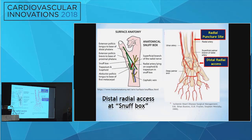Talking about the anatomy, we are discussing transdistal radial access through the anatomic snuffbox, which is a triangular area on the dorsal surface of the hand. Anteriorly is the extensor pollicis brevis, posteriorly is the extensor pollicis longus. The base of the snuffbox is formed by the scaphoid and trapezium bones, on top of which is the distal radial access artery. The diagram on the right shows the demographics illustrating the actual puncture site of radial access versus distal radial access.